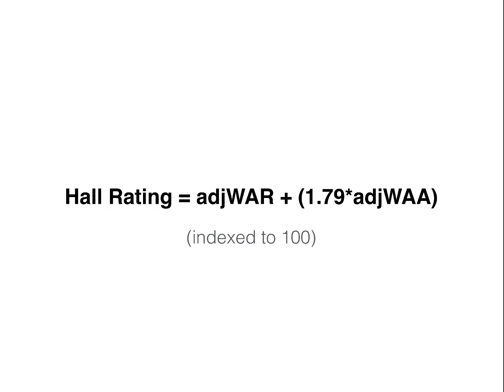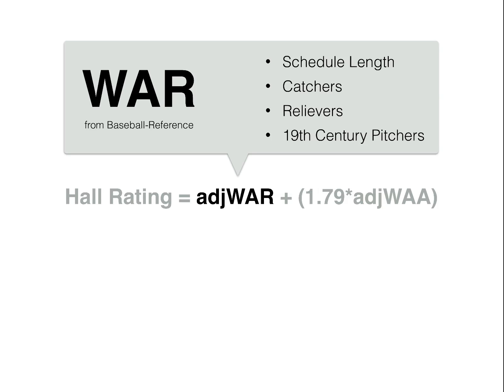Hall Rating is an adjusted version of WAR plus a weighted adjusted version of Wins Above Average, and then that's all indexed to 100. The adjusted WAR component is what I use to measure the longevity of a player's career. I start with Baseball Reference's Wins Above Replacement and run through a few adjustments. The first is for schedule length, which is key for 19th century players, because players like Deacon White only played 29, 60, or 80 game seasons and couldn't accumulate as much WAR as a player today in a 162-game season. So I prorate the length of their seasons — I give them credit for the halfway point between what they actually earned and what their prorated total would be. So if a player had an 80-game season and was worth 2 WAR, I wouldn't give him 4 WAR; I would give him the halfway point, which is 3 WAR.